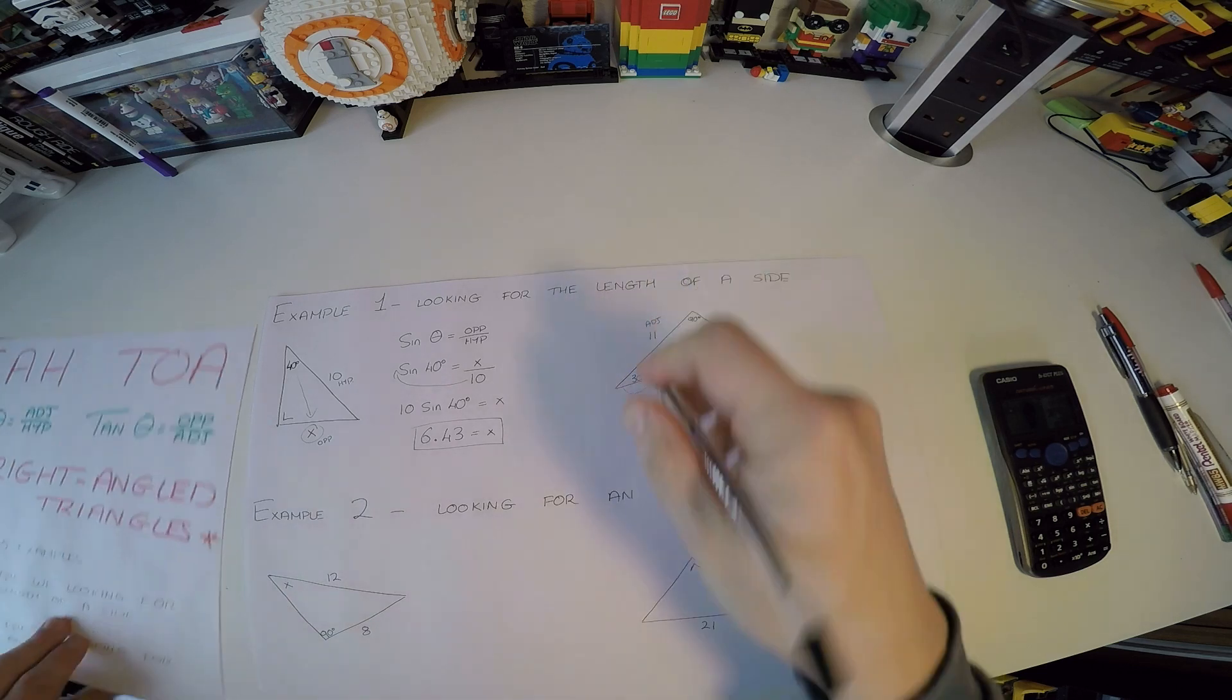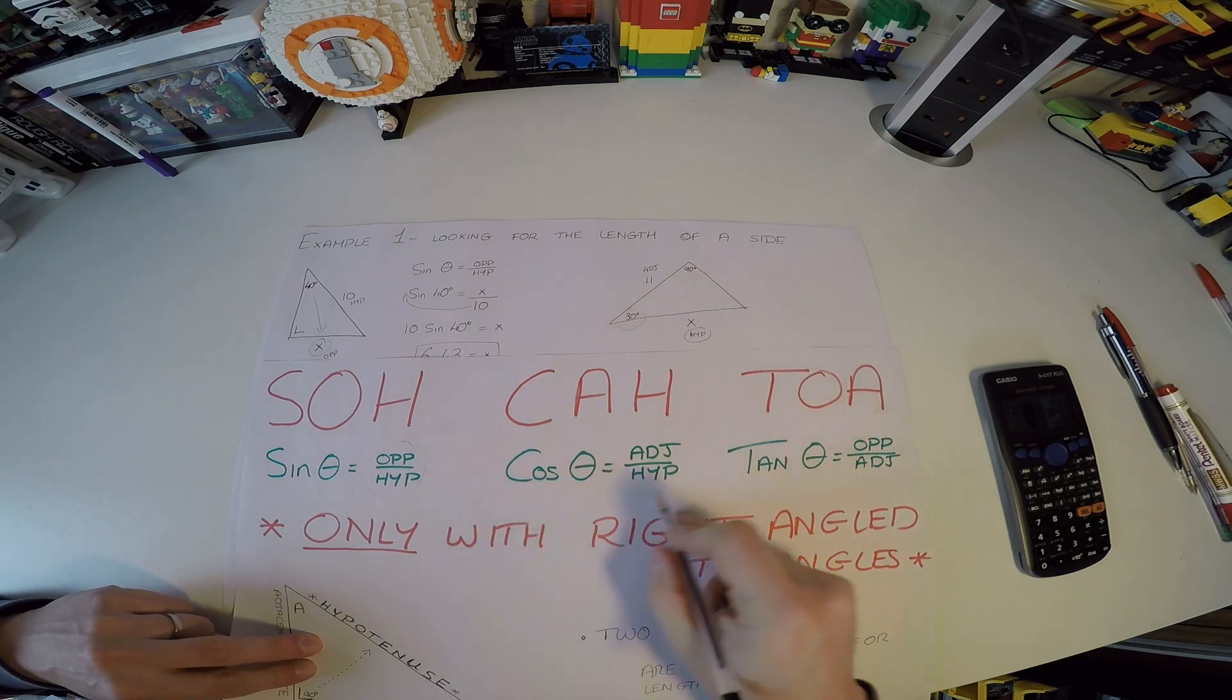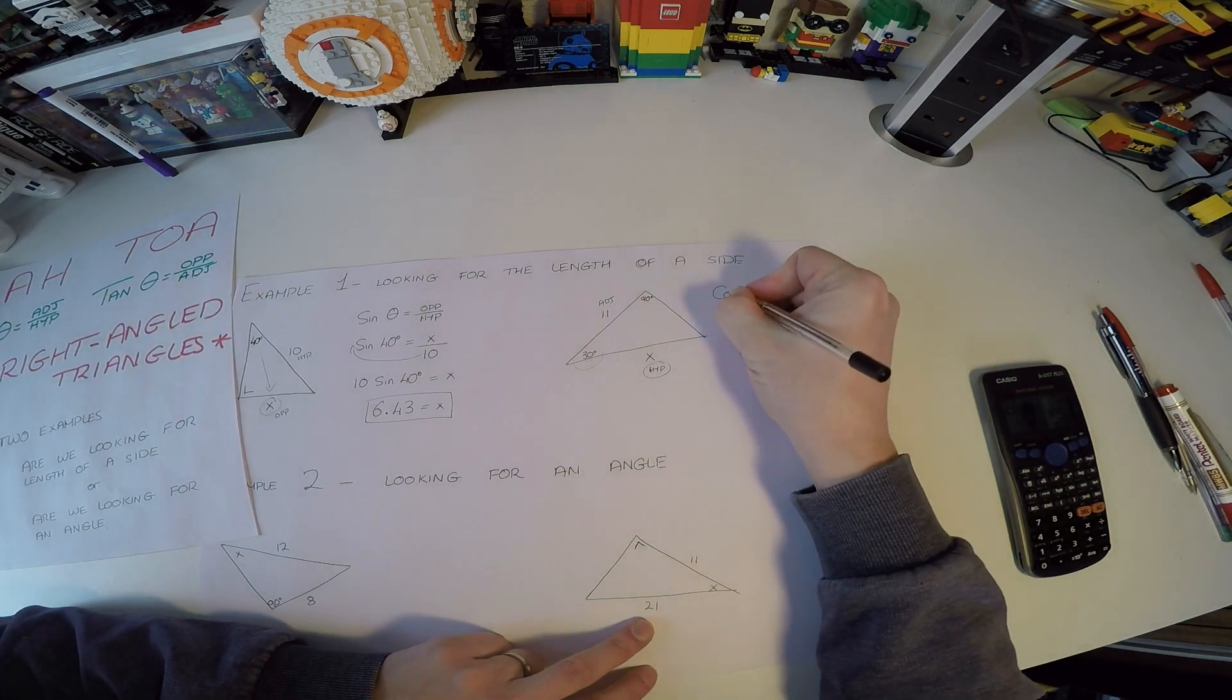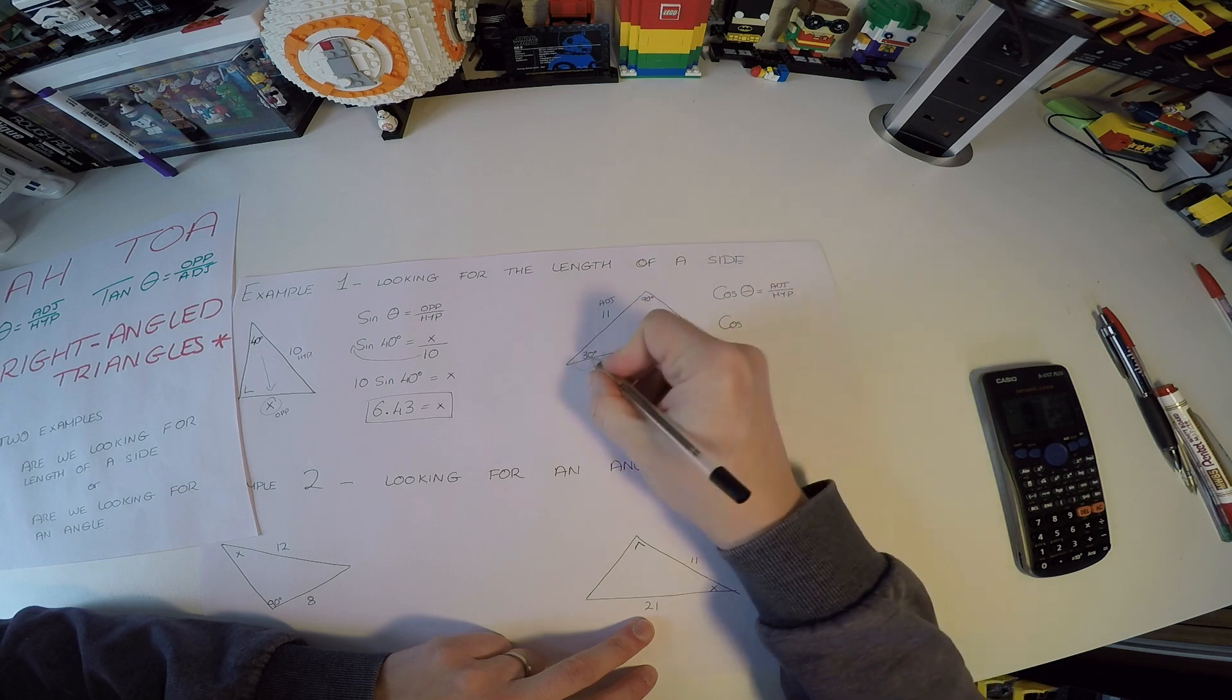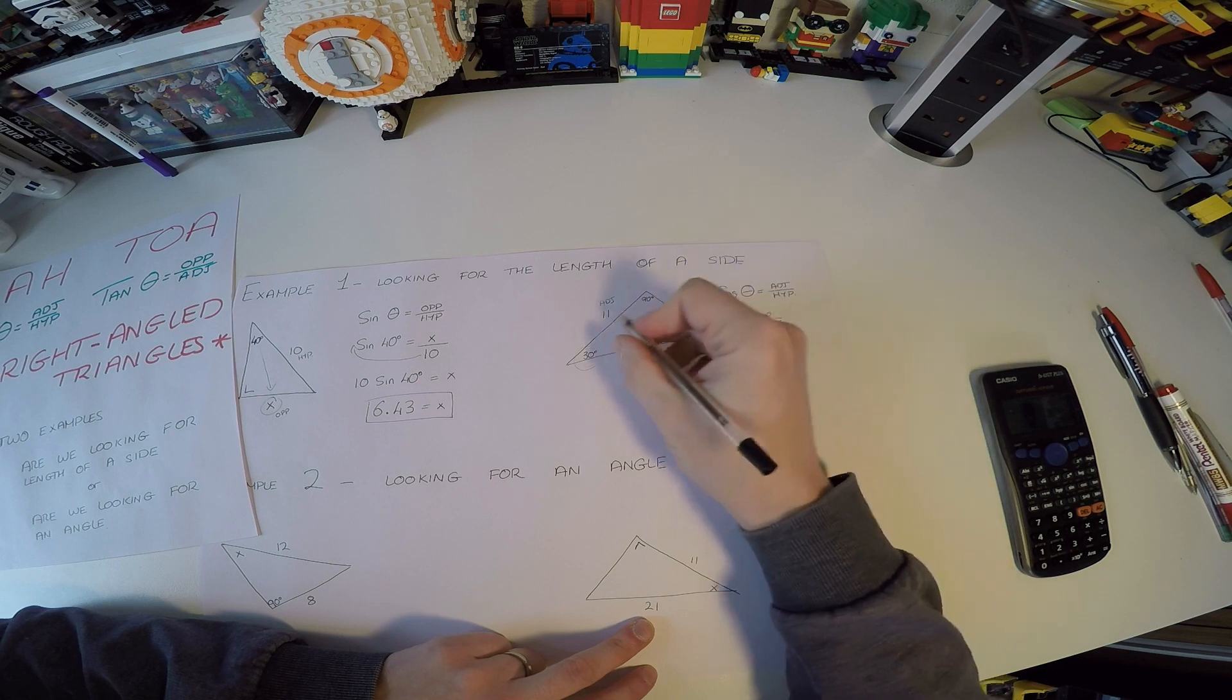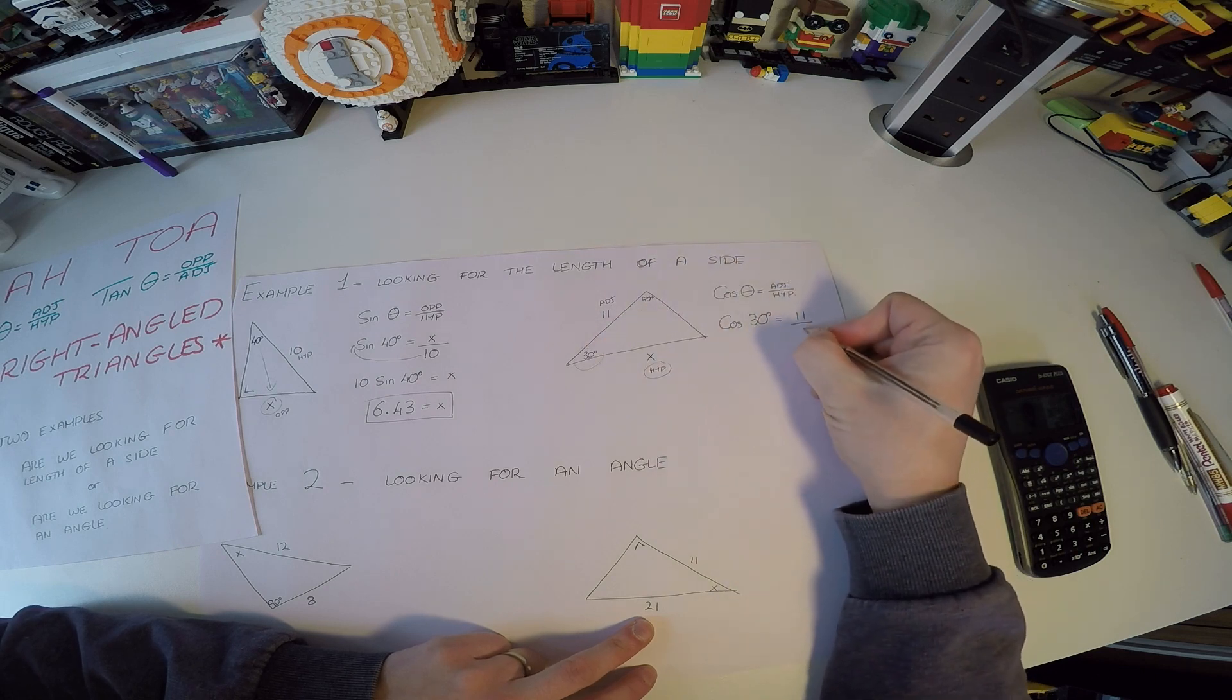So again, we will look at our sheet and see which formula uses adjacent and hypotenuse, and we can see that it's the cosine angle. So we could say the cosine of theta is equal to adjacent over hypotenuse. Let's fill in what we have. Remember, we're using the 30 degrees. The cosine of 30 degrees, the adjacent side is 11, and the hypotenuse is X.